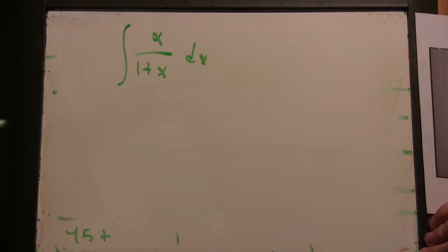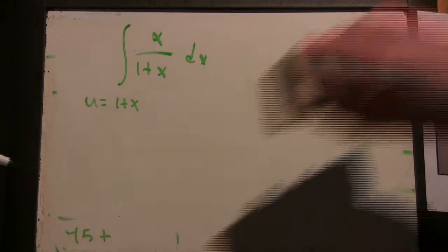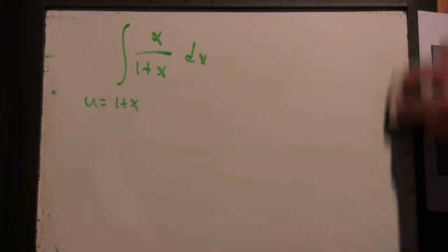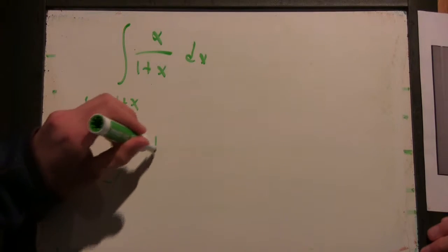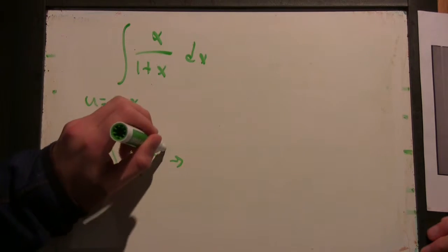So this one, I think my earlier idea of saying u is 1 plus x is going to work. Okay, so we get the integral of u minus 1 over u, which turns into u here.